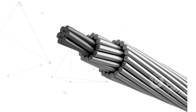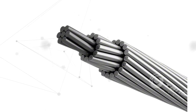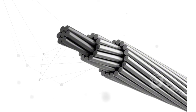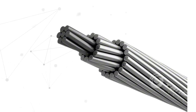Generally, in successive layers, the stranding is done in the opposite direction to the preceding layer. This means if the strands of one layer are twisted in a clockwise direction, the strands of the next layer will be twisted in an anti-clockwise direction, and so on, depending on the number of layers in the conductor.